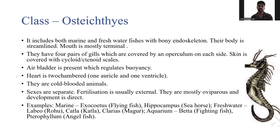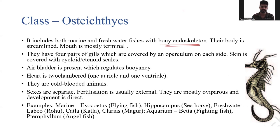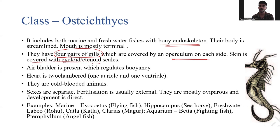The next class is Osteichthyes. These organisms are marine as well as freshwater fishes with a bony endoskeleton. Their body is streamlined, which helps them penetrate water against the current easily. The mouth is mostly terminal. They have four pairs of gills covered by the operculum on each side. The skin is covered by cycloid and ctenoid scales.